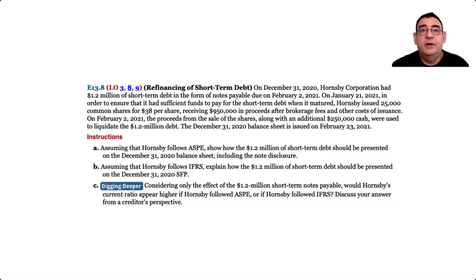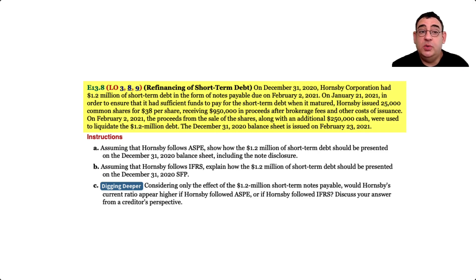Here's our problem. On December 31, 2020, Hornsby Corporation had $1.2 million of short-term debt, classified as notes payable, due on February 2, 2021. On January 21, 2021, to ensure the company had enough funds for the short-term debt when it matured, the company issued 25,000 common shares for $38 a share, receiving $950,000 in proceeds after brokerage fees and other costs.